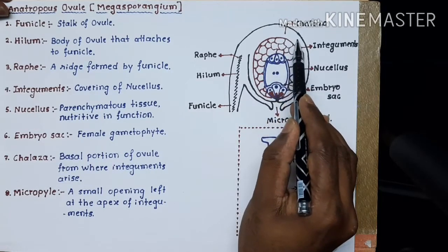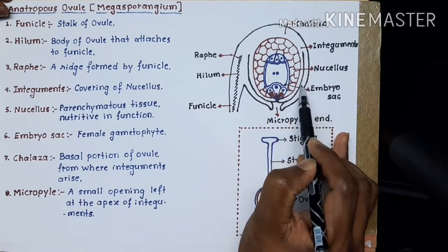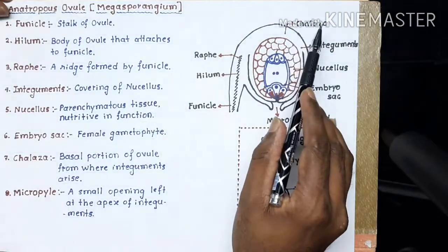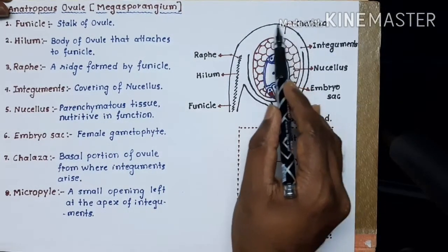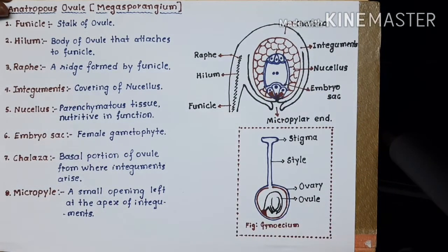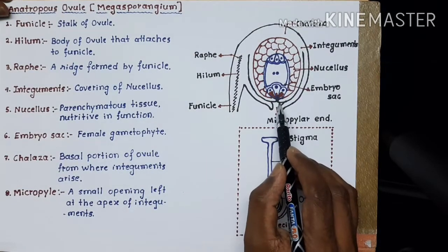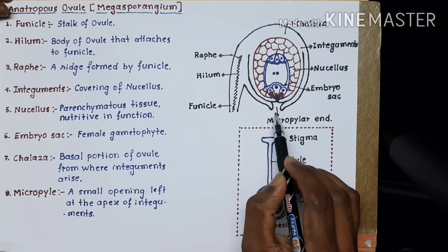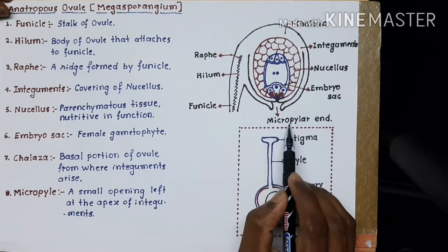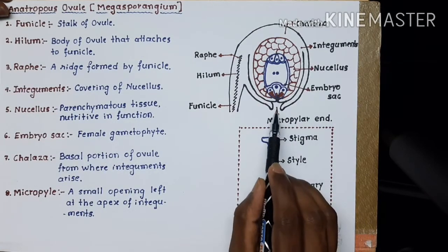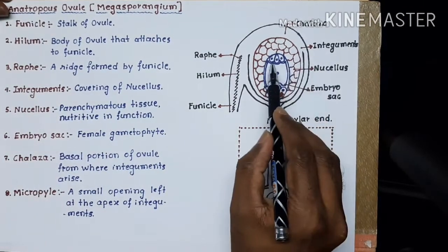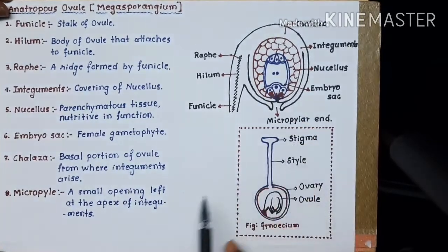Through cell division, gradually the integuments arise from the basal part of the ovule. At the apex of the integuments, there is a small hole — a small opening left at the apex of the integuments — and this is called the micropylar end. This embryo sac has 8 nuclei and 7 cells, which we will see in a later class.